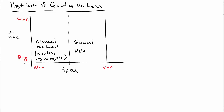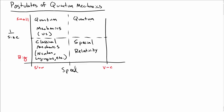At higher speeds we have special relativity, but for still big objects. Up in the upper left-hand corner, at slow speeds and small sizes, we have quantum mechanics — and that's what we're going to be studying. In the upper right-hand corner, at large speeds and small sizes, we have the realm of quantum field theory, which we're not going to be talking about.